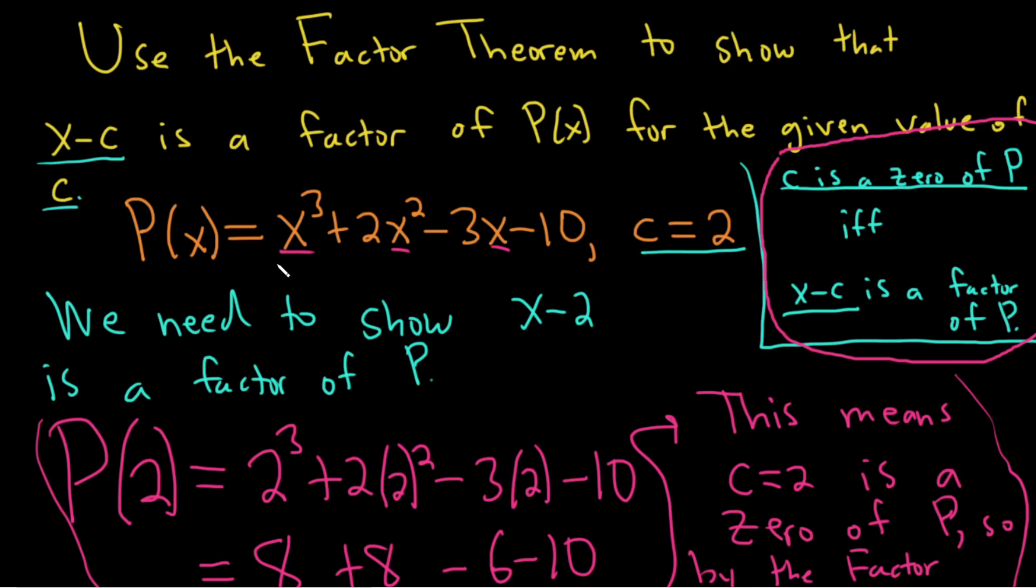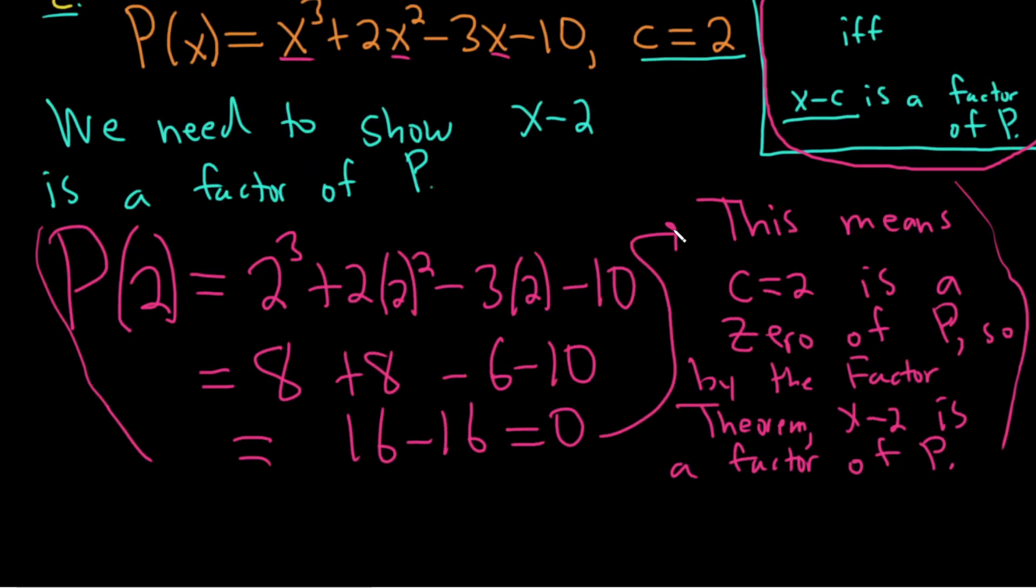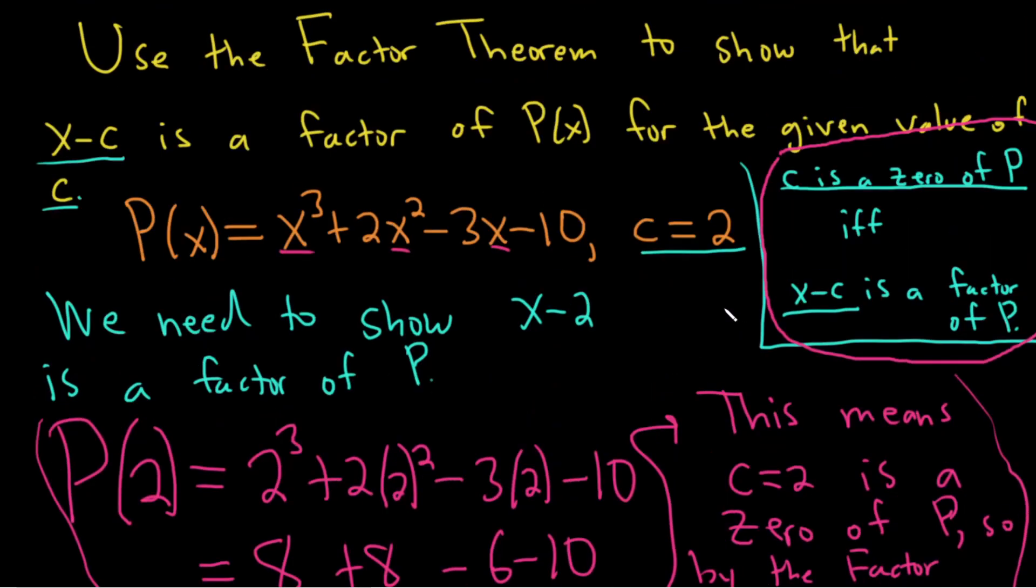So they both imply each other. We have to show that x minus 2 is a factor because x minus c is what they want us to show. So we show that 2 is a 0. What does that mean? We just plug in the 2, go through all of this, and we get 0. So this means 2 is a 0. So by the factor theorem, x minus 2 is a factor of P. I hope that made sense. Good luck.